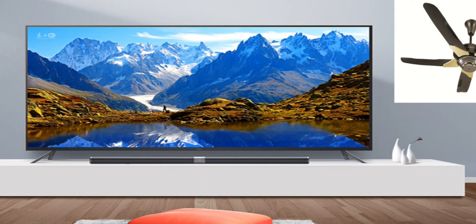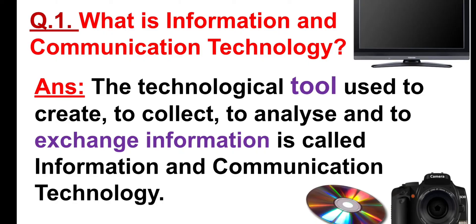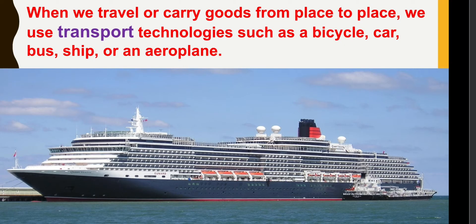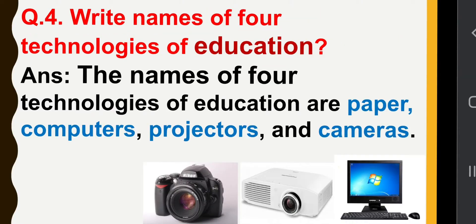When you analyze information, you exchange it with your friends or relatives — that is called ICT. I means Information, C means Communication, and T means Technology. ICT makes our life easy and is used in many ways in the fields of business, education, medical, and agricultural services.